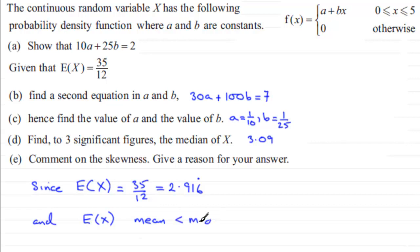And when this occurs, what we have got is negative skew. So we just put that in - negative skew. And there you go, that's the answer to our problem. Comment on the skewness: it's negative. And give a reason for our answer: that is because the mean is less than the median. All right.